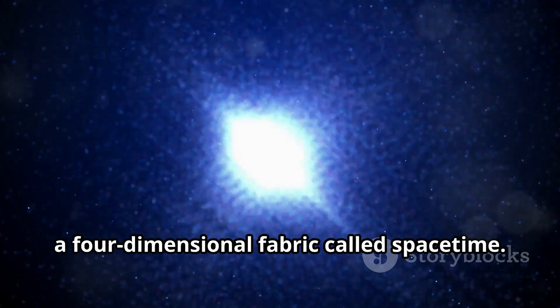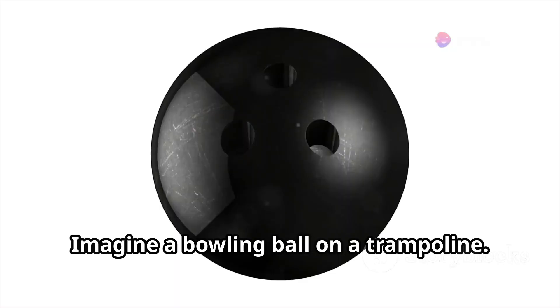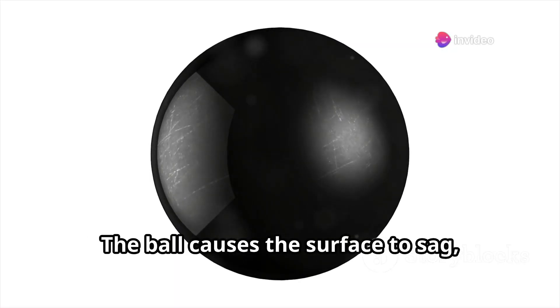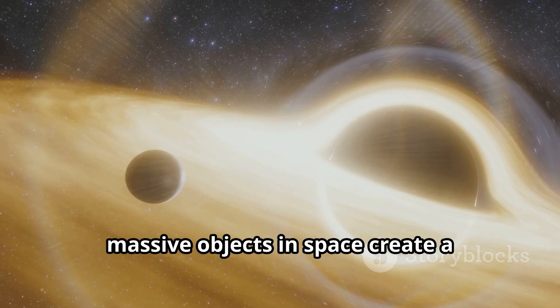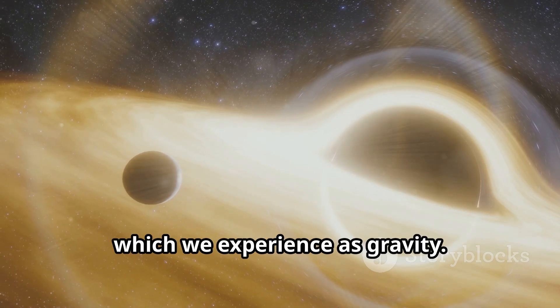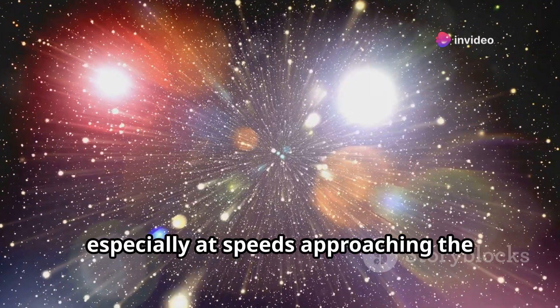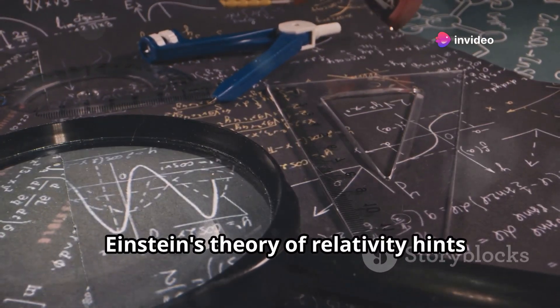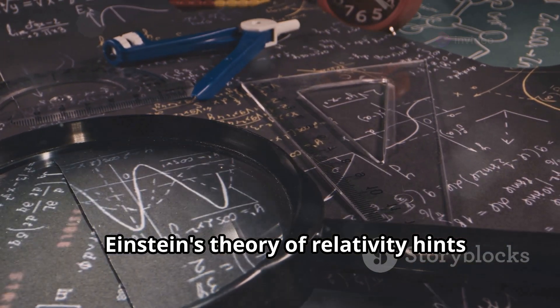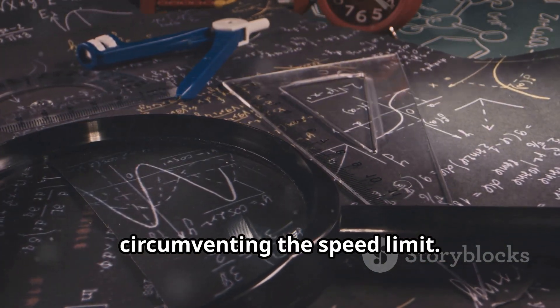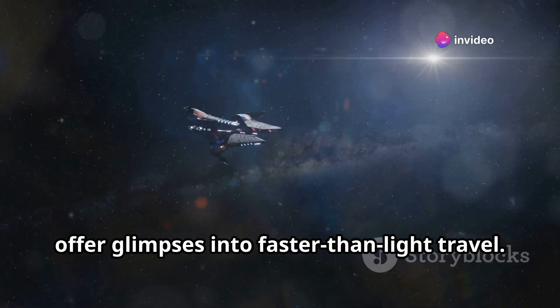Einstein's theory of relativity tells us that space and time are intertwined in a four-dimensional fabric called space-time. This fabric can be warped and curved by mass and energy. Imagine a bowling ball on a trampoline—the ball causes the surface to sag, creating a curvature. Similarly, massive objects in space create a curvature in space-time, which we experience as gravity. Einstein's theory hints at intriguing possibilities for circumventing the speed limit: concepts like warp drives and wormholes offer glimpses into faster-than-light travel.